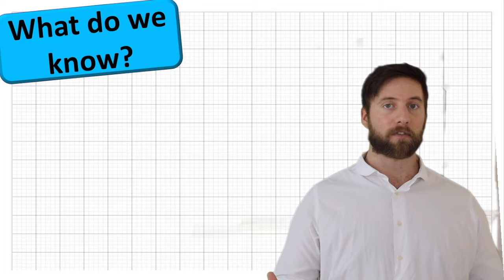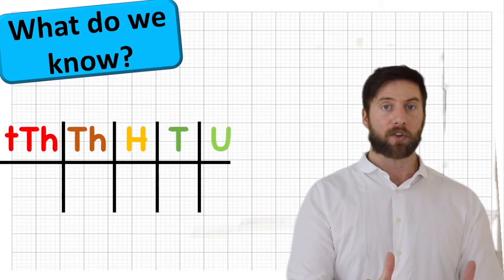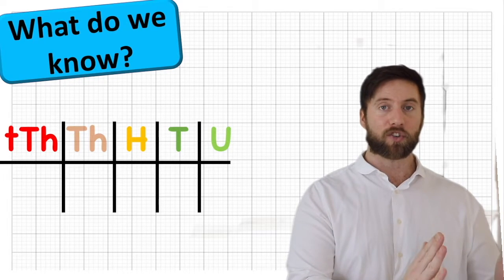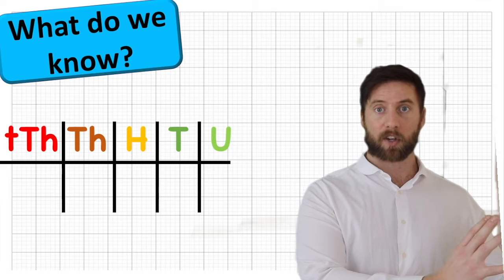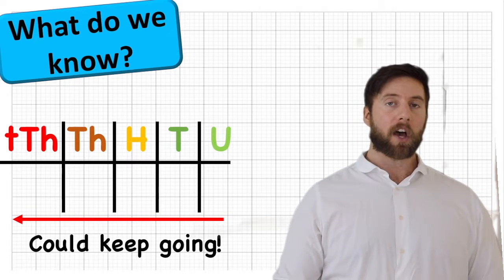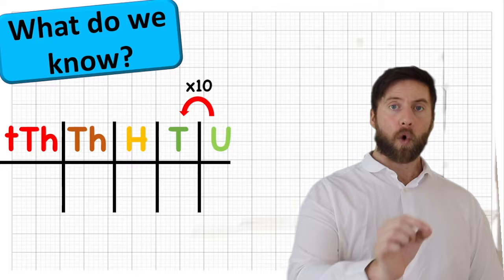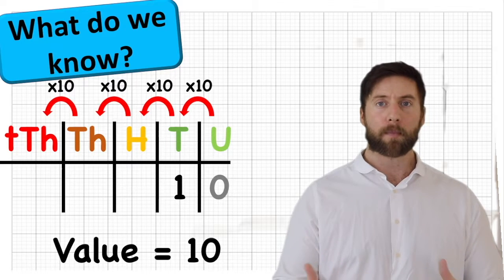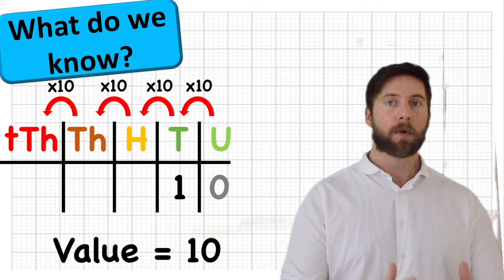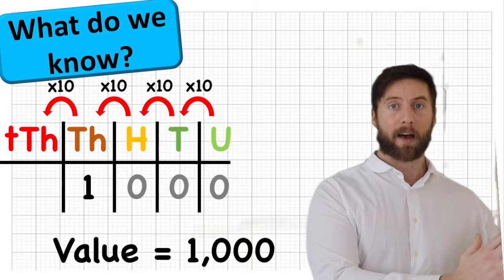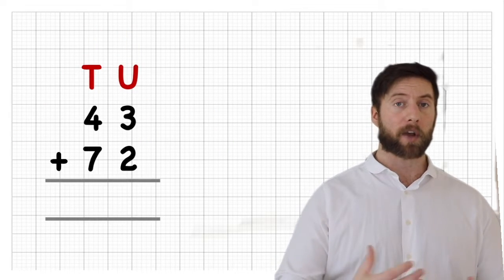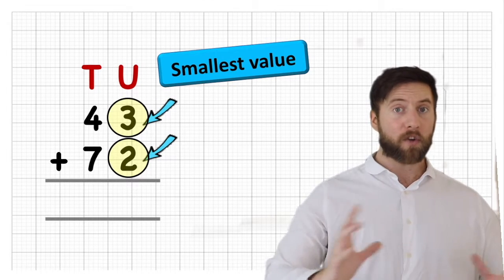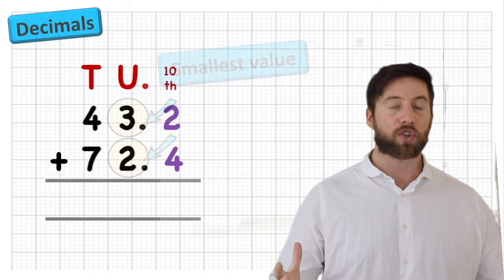So what do we know so far? Well, we've been very used to looking at the place value chart when looking at numbers. And we've learned things like units, tens, hundreds, thousands, even ten thousand and one hundred thousand. We've learned that every time we go along one column, we are multiplying that value by ten. We've also learned that when we do a calculation involving addition and subtraction, we always start from our smallest value, which so far has just been units.